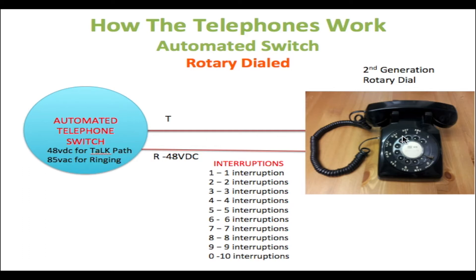If you dial the number two, there will be two interruptions. On the return path from the metal barrier back to the two position, you come into contact with two switches opening and closing the circuit two times, stopping the flow of current twice. This is not enough to drop the line — it's just enough to disrupt the flow of current so that the switch knows you have dialed the digit two. Similarly, if you dial the number five, on the way back to the five position you hit five switches opening and closing the line five times, so the switch knows you have dialed the number five.